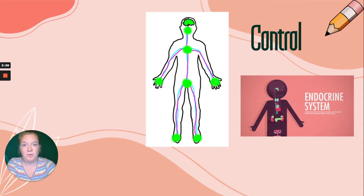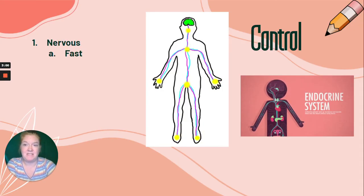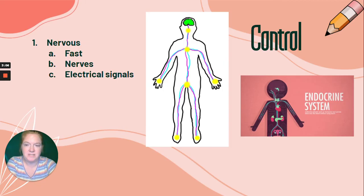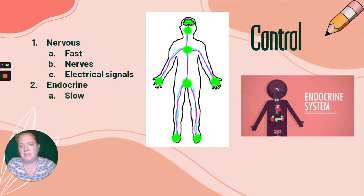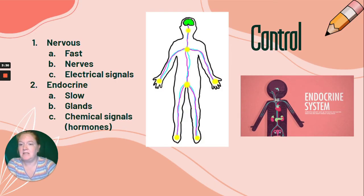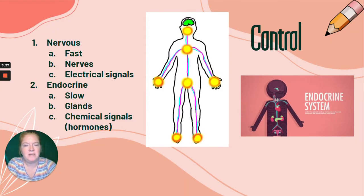Now let's talk about control. The nervous system is fast — it involves nerves and electrical signals, which is why it happens so fast. Neurons don't need to communicate with any other system, so it's immediate. The endocrine system is our slow system — slower than a nervous system response. It involves glands that release chemical signals, or hormones, into the bloodstream, which is why it takes a little more time. It relies on the bloodstream to transmit the message around the body.